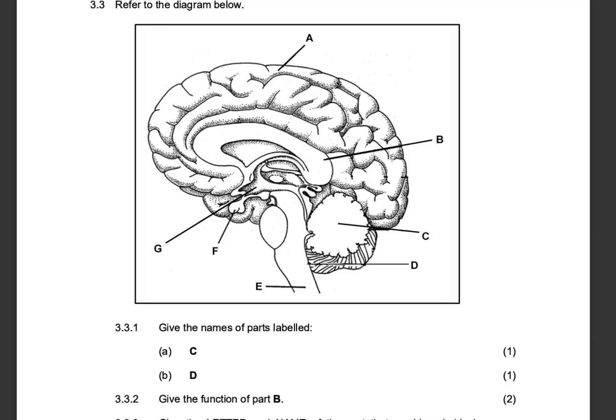Let us look at question 3.3. Refer to the diagram below. This question is from the June 2024 question paper. Give the names of the parts labeled — they will always ask you this type of question from this diagram, asking for the name and the letter.